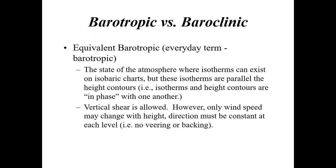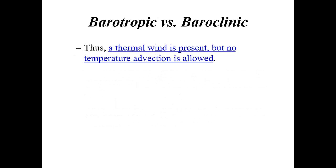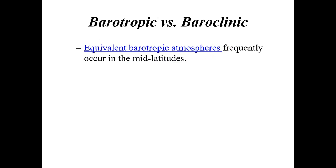There's another type called equivalent barotropic — a state where isotherms can exist on isobaric charts but are parallel to height contours, giving an in-phase relationship. Vertical shear is allowed, but only wind speed may change with height while direction remains the same at every level. You do get a thermal wind but there's still no temperature advection. Equivalent barotropic atmospheres frequently occur in the mid-latitudes.